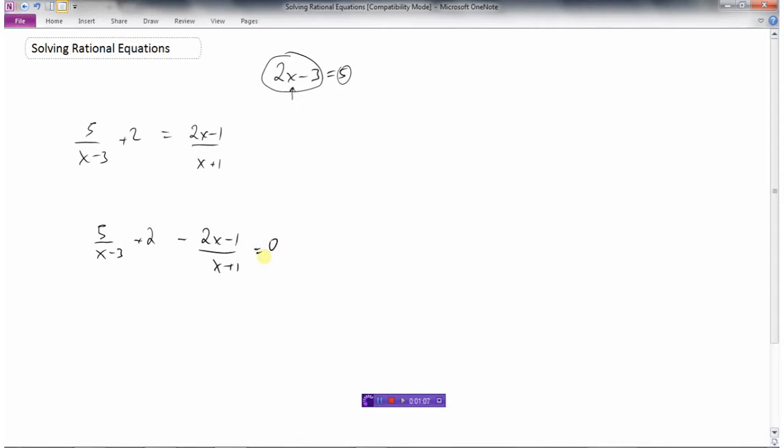So I've set everything to the left-hand side, and I'm going to graph a function y1 equals 5 over x minus 3 plus 2 minus 2x minus 1 over x plus 1. I'm going to graph this function, the same one that I've generated here.